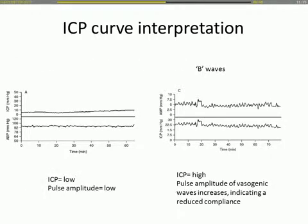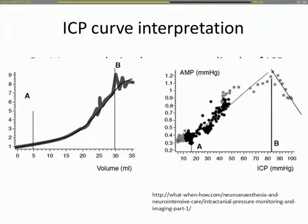When ICP is low, the pulse amplitude is also low. As ICP rises, B waves become more prominent, indicating reduced compliance. This means the arterial component of the signal is becoming relatively more important because the other compensatory mechanisms are exhausted.